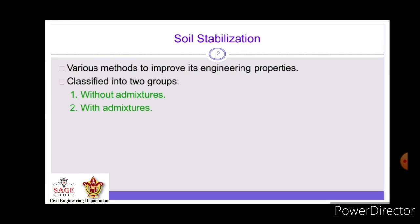As we all know, Soil Stabilization is a technique which is used to make the soil stabilized by a natural mean or by an artificial mean, or to improve the bearing capacity of a soil — this is known as Soil Stabilization.